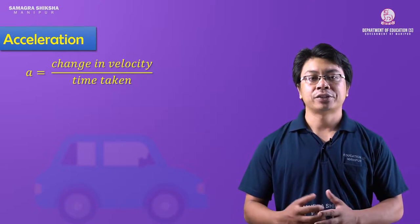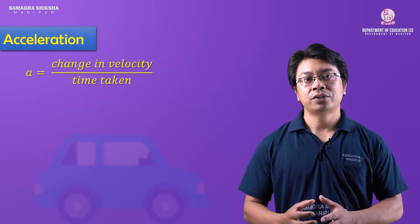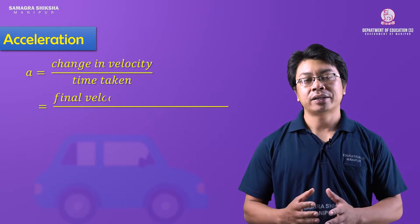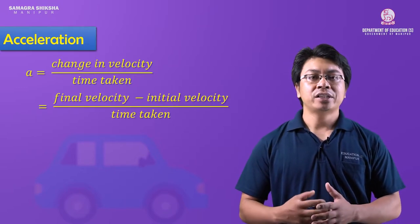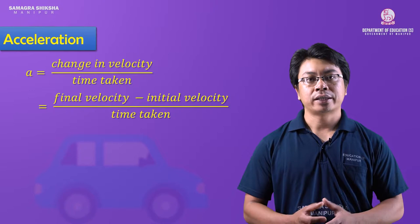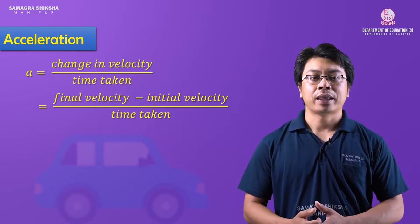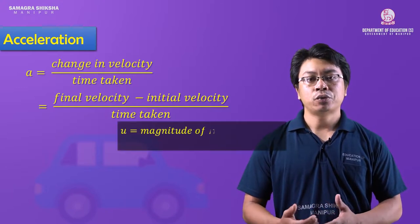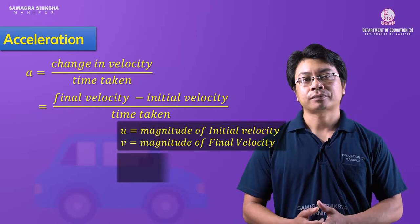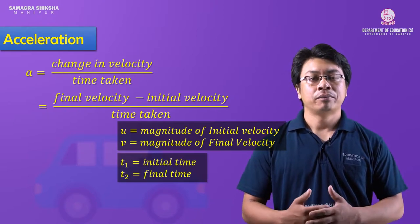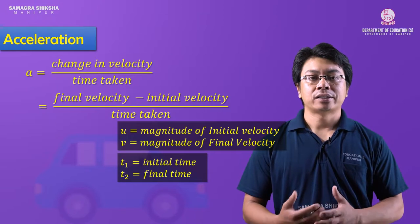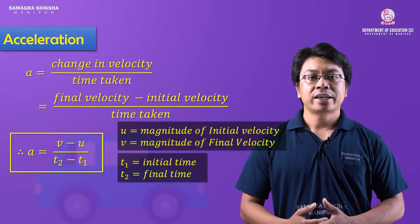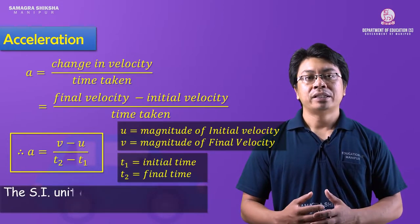The change of velocity is final velocity minus initial velocity. The final velocity is v and the initial velocity is u. The time interval is t2 minus t1, so acceleration = (v − u) / (t2 − t1). The unit of acceleration is meter per second squared.